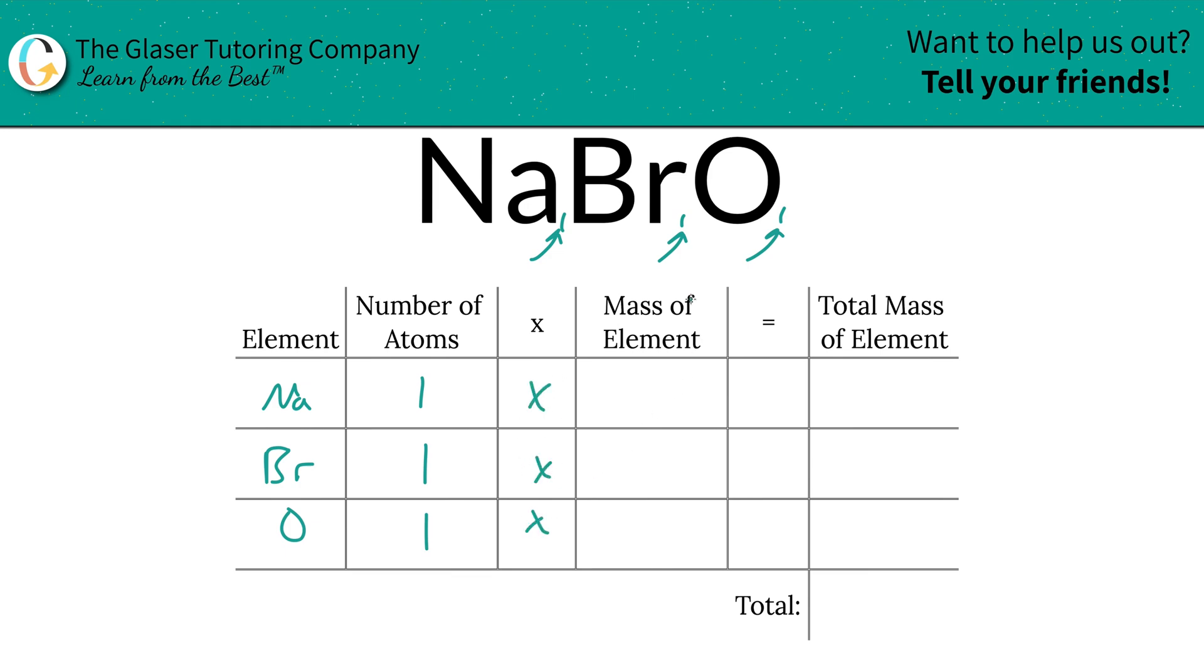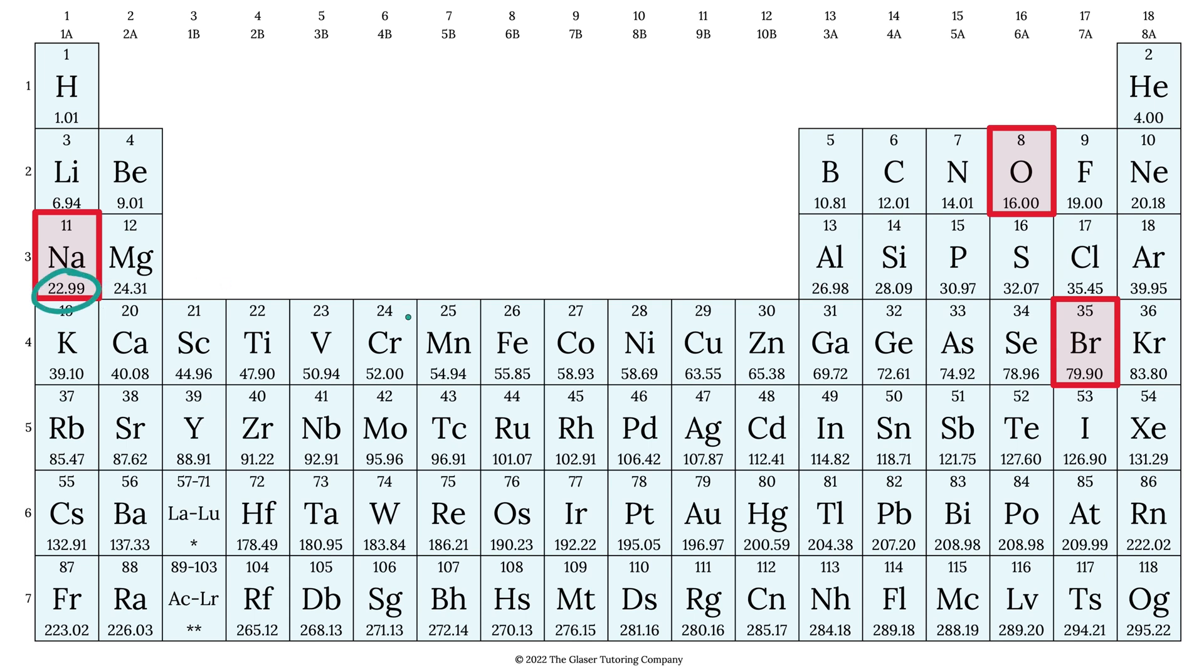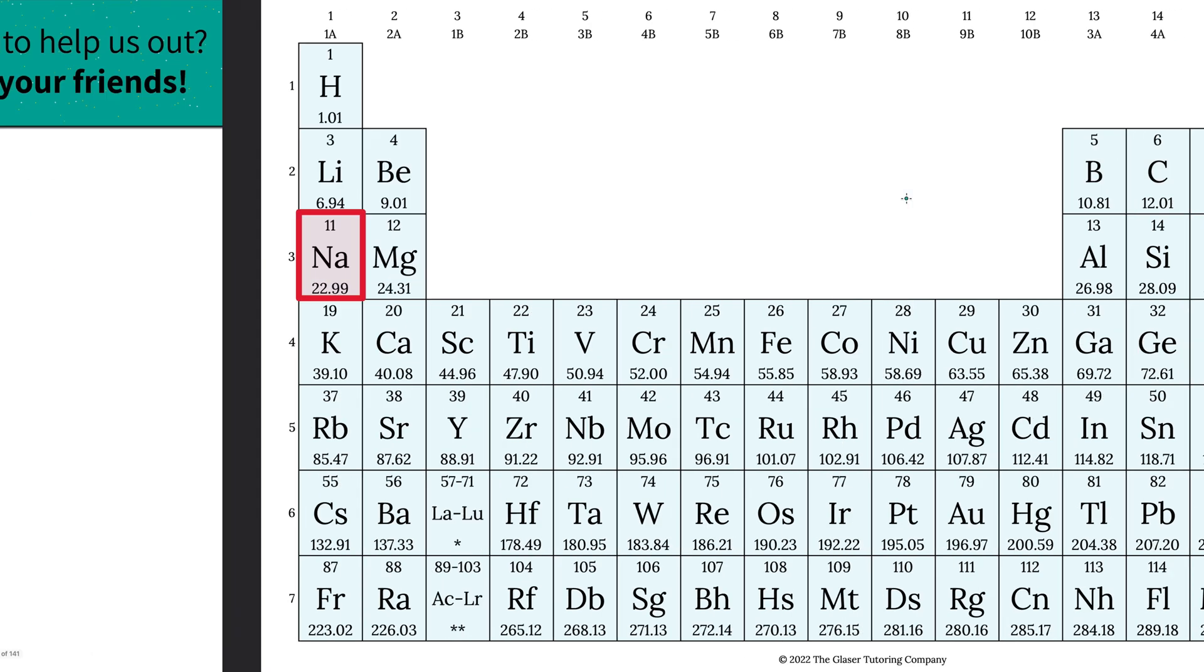Then we're simply going to multiply those number of atoms by the mass of each element. And that's where the periodic table comes into play. So sodium's mass is 22.99, bromine is 79.9, and oxygen is 16.